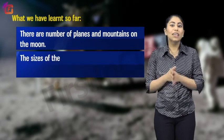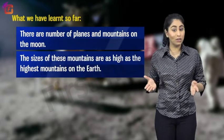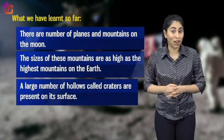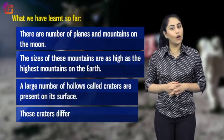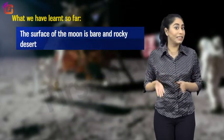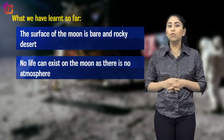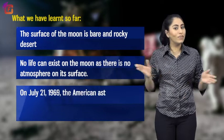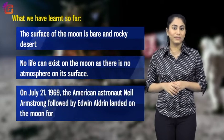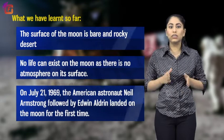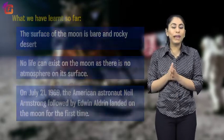What we have learnt today is that there are a number of plains and mountains on the moon, as high as the highest mountains on the earth. A large number of hollows called craters are present on its surface, and these craters differ in size and depth. The surface of the moon is a bare and rocky desert with no atmosphere, so no life can exist there. On July 21st, 1969, Neil Armstrong, followed by Edwin Aldrin, landed on the moon for the first time.